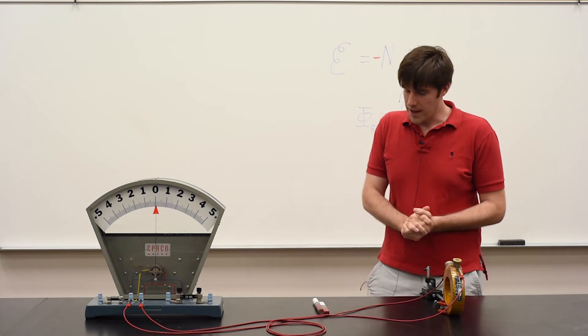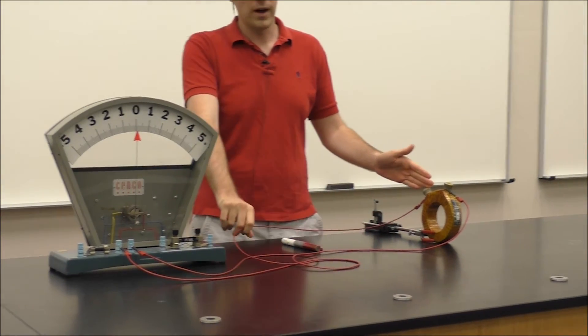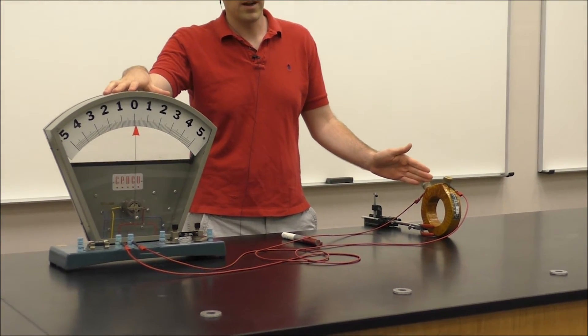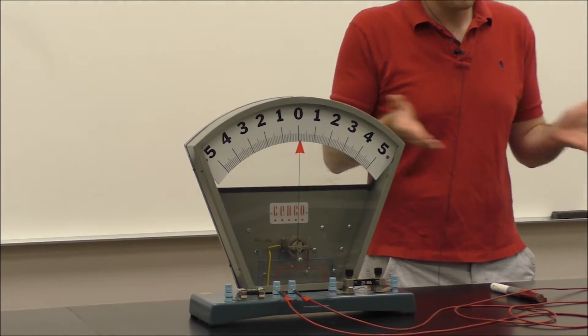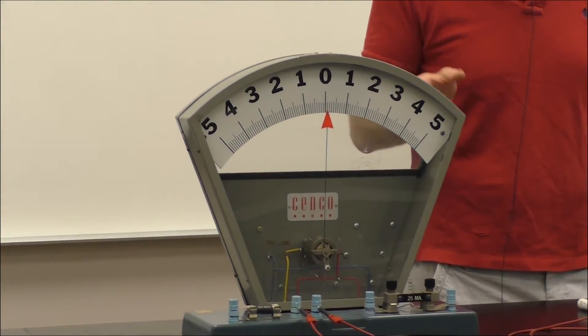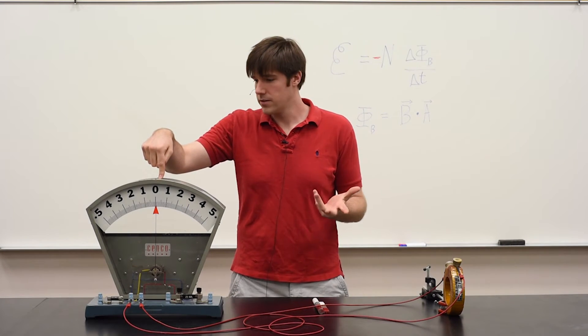In this demo, we have a set of coils which are connected by wires in series with a galvanometer. Currently, there is no power source or any batteries. So you can see that the reading on the galvanometer, which measures current, says zero.